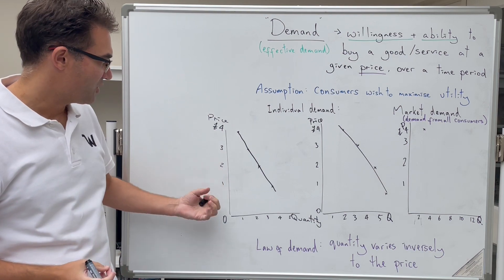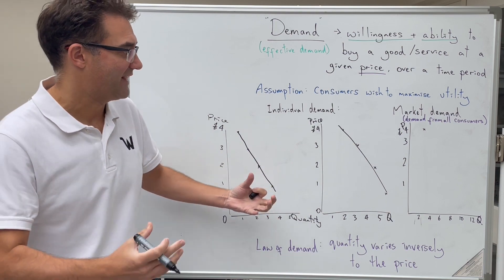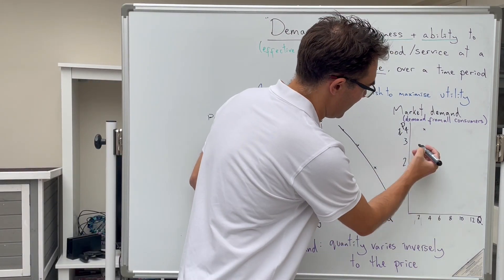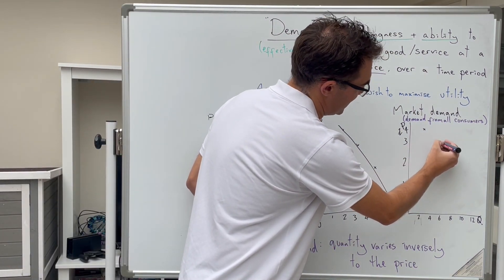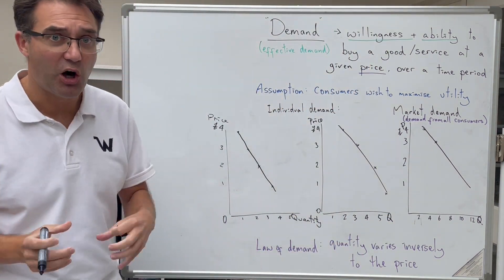We can do the same with the others as well. So at three pounds, I was buying two, Person B is buying three. We add that together and we've got five sandwiches and we carry that on. We end up with our market demand curve.